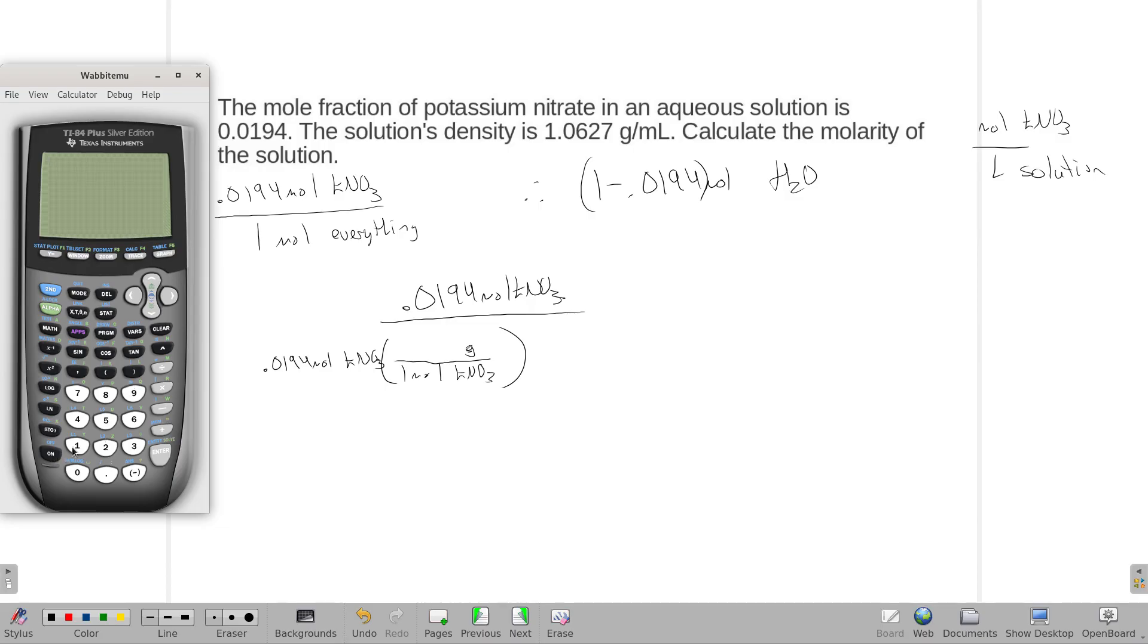So, potassium has a mass of 39.1, nitrogen is 14.01, and then three oxygens. I get 101.11.